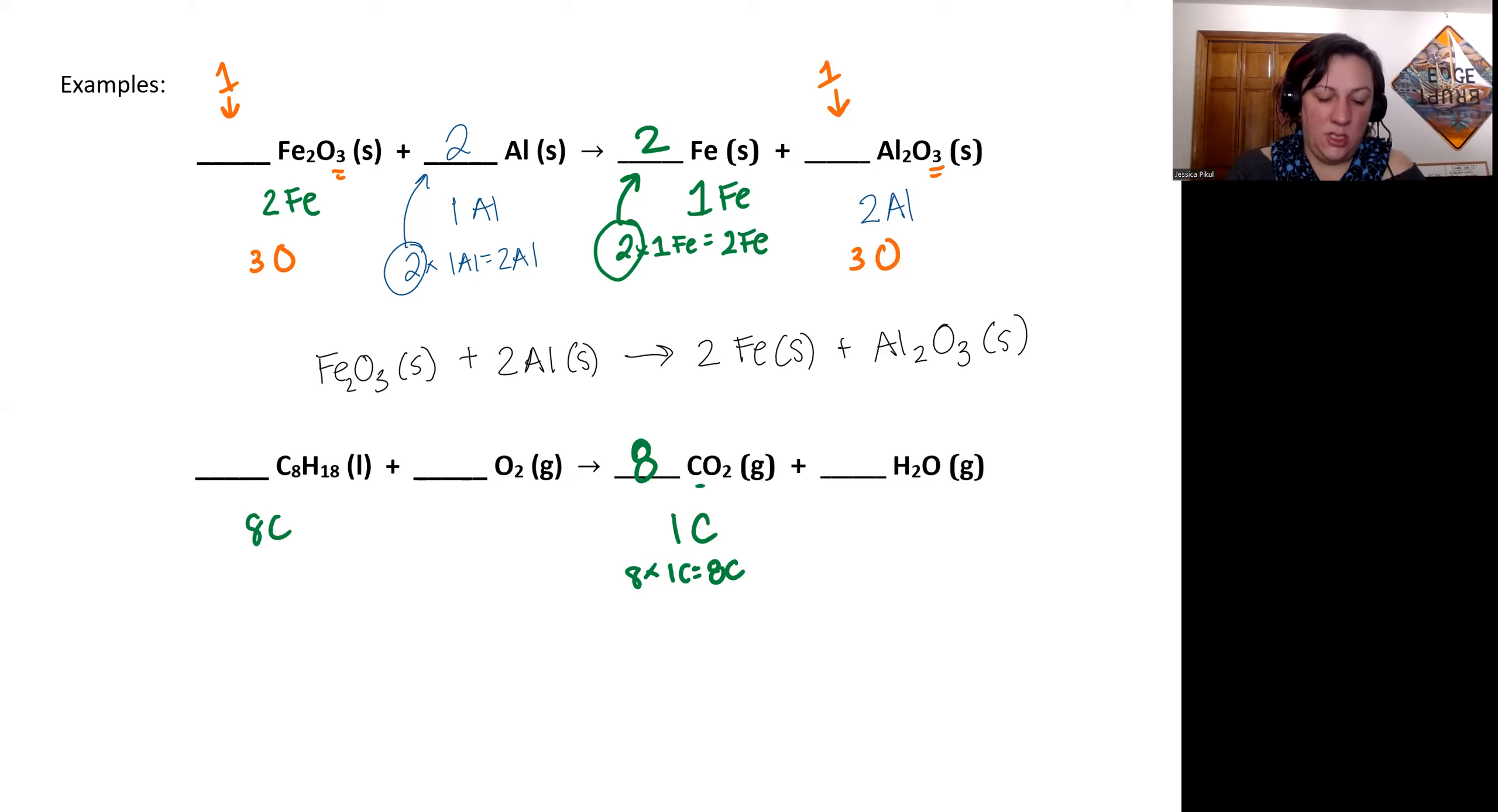All right, next up I'm going to do hydrogen. I've got 18 hydrogen on my reactant side and I have two hydrogen on my product side. Again, I focus on the side with less. So I need to think about what times my two hydrogen will equal 18 hydrogen so it's balanced on both sides. So that's going to be a nine. So nine times two should be 18. If you're feeling stumped on this, you can always do the 18 divided by two. That would equal nine.